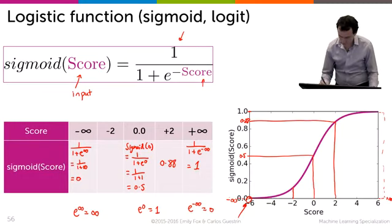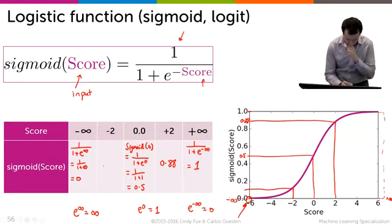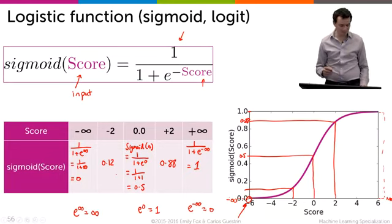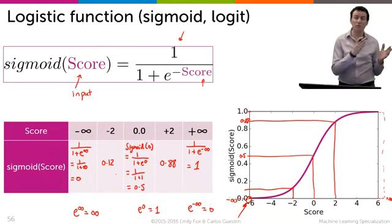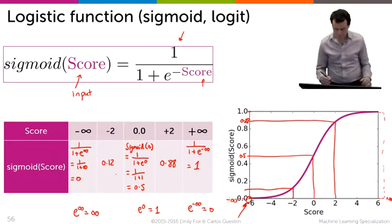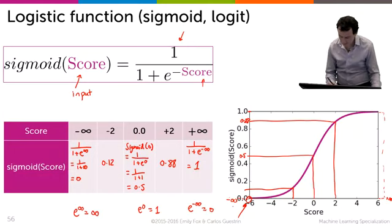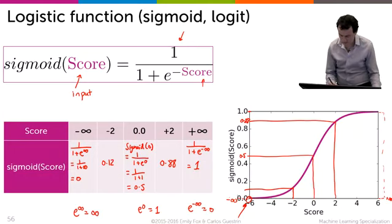And if the score were minus 2, we have 0.12. It's a symmetric function that ranges from 0 to 1. And so it provides exactly the mapping from minus infinity to infinity to the interval 0, 1.